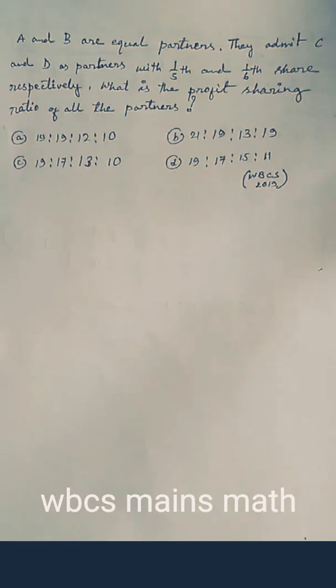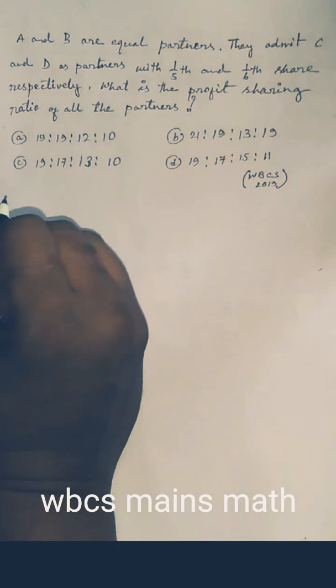A and B are equal partners. They admit C and D as partners with 1/5th and 1/6th share respectively. What is the profit sharing ratio of all the partners?